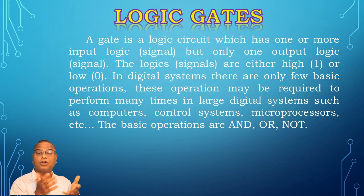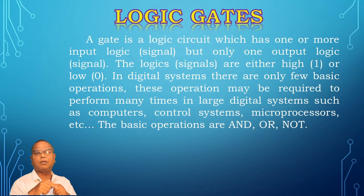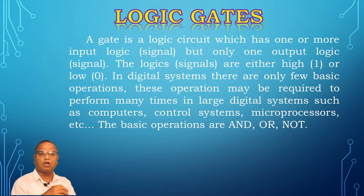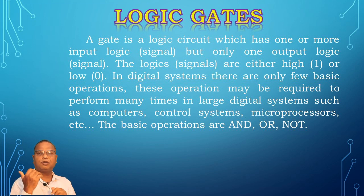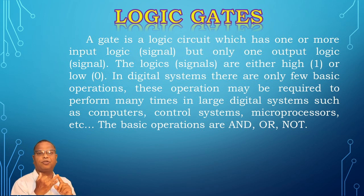A small digital device is made from these operations, and large-scale devices like computers and microprocessors use the same operations — addition, multiplication, subtraction, etc. We perform three basic gate operations: AND operation means multiplication, OR operation means addition, and NOT operation means inversion.